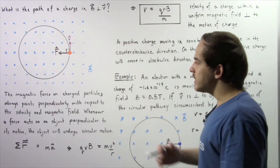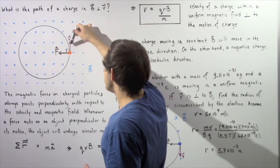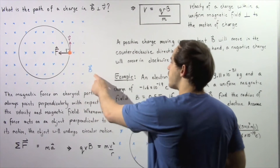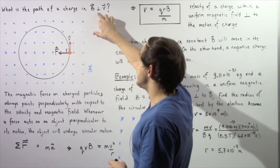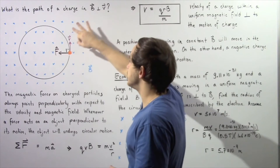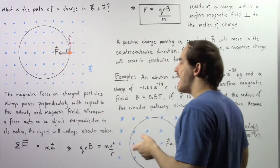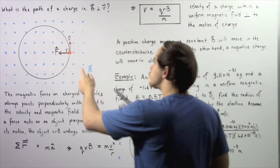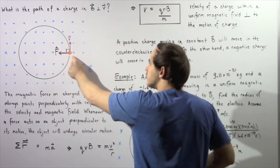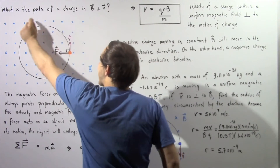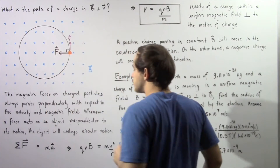The magnetic force on a charged particle always points perpendicular — at a 90-degree angle — with respect to the velocity as well as with respect to our magnetic field. Because our magnetic field is perpendicular to the velocity and the velocity is perpendicular with respect to the force, this magnetic force will create a centripetal acceleration and our charged particle will move in the following direction. Because this particle has a positive charge, it will move in a counterclockwise direction. If this was a negative charge, it would move in a clockwise direction.